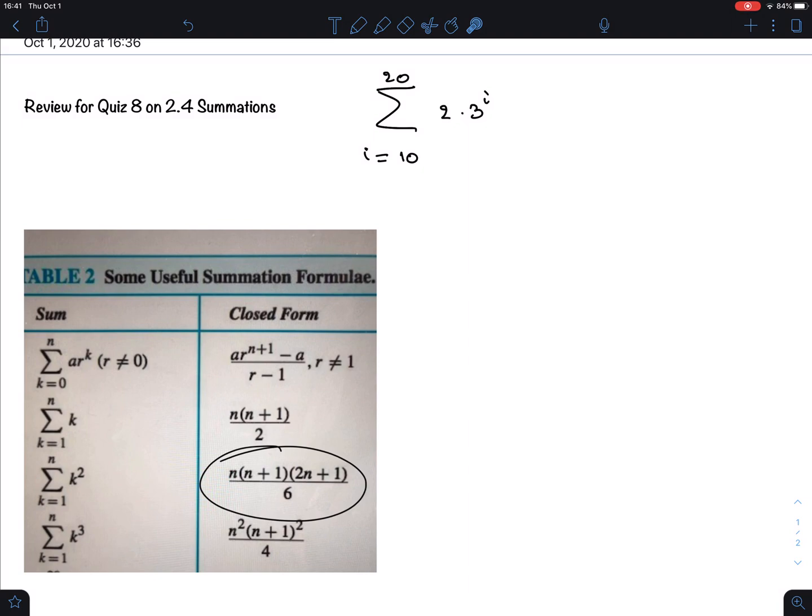We have to now apply this formula. We are dealing with the first one here, and the first thing you have to determine is what a is going to be. a is going to be that constant 2 that we multiply, and then the ratio r which we multiply is 3.